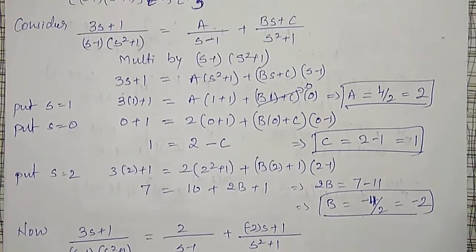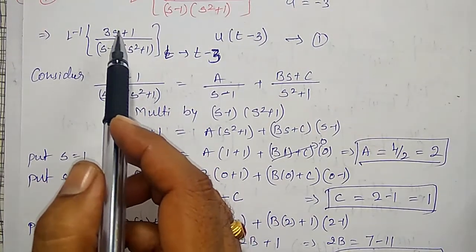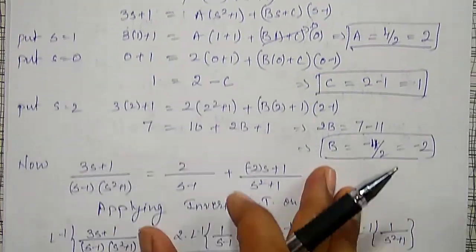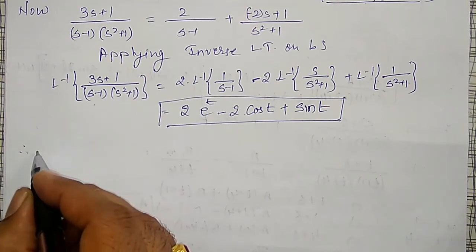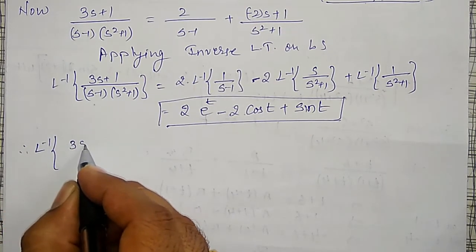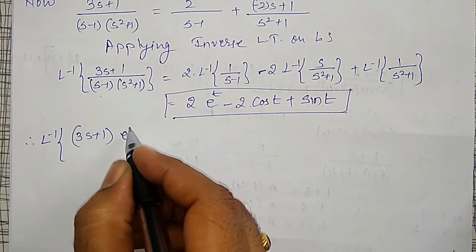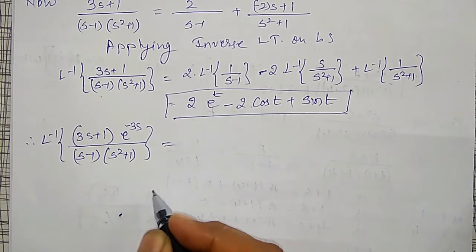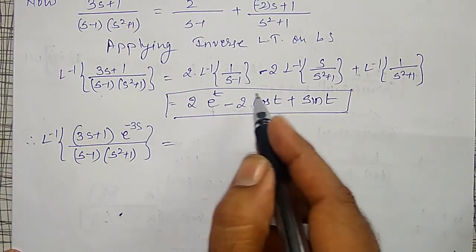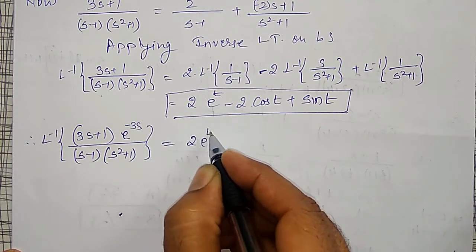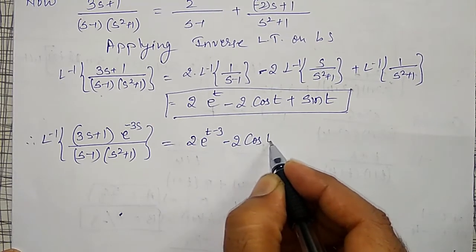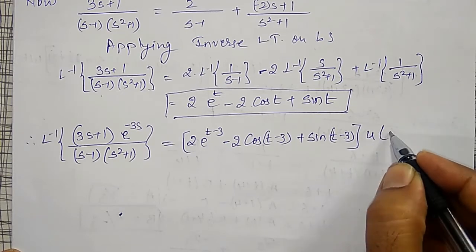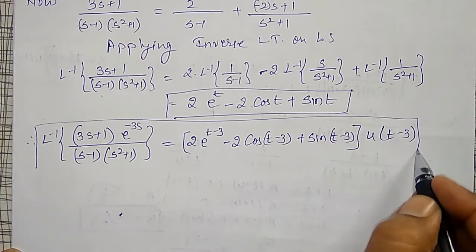Using equation 1, the inverse Laplace transform is found by replacing t with t minus 3 and multiplying by u(t minus 3). Therefore, the inverse Laplace transform of e^(minus 3s) · (3s + 1) / [(s minus 1)(s squared + 1)] equals [2·e^(t minus 3) minus 2·cos(t minus 3) plus sin(t minus 3)] · u(t minus 3). This is the required final answer.